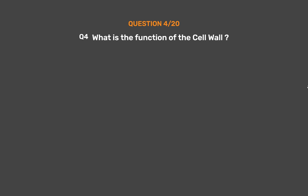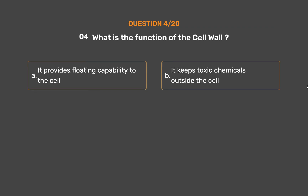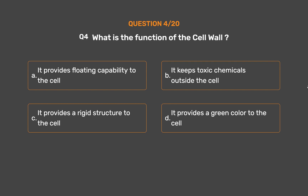Question number 4. What is the function of the cell wall? Option A: It provides floating capability to the cell. Option B: It keeps toxic chemicals outside the cell. Option C: It provides a rigid structure to the cell. Option D: It provides a green color to the cell.